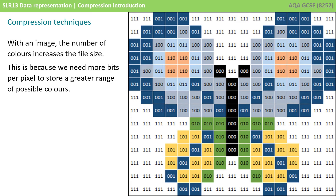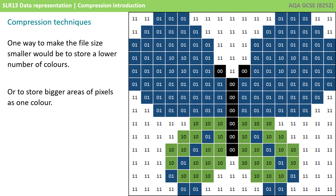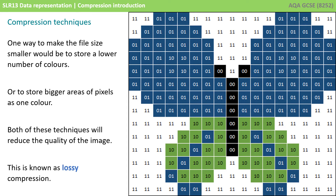In a previous video, we understood that the number of colours increased the file size because the number of bits per pixel increased. An obvious way of making the file size smaller is to store a lower number of colours, or perhaps to store bigger areas of pixels as one colour. Both of these methods will affect the quality of the image stored, and therefore this is known as lossy compression. Algorithms such as JPEG and GIF, although very different, work a little like the two ways described.